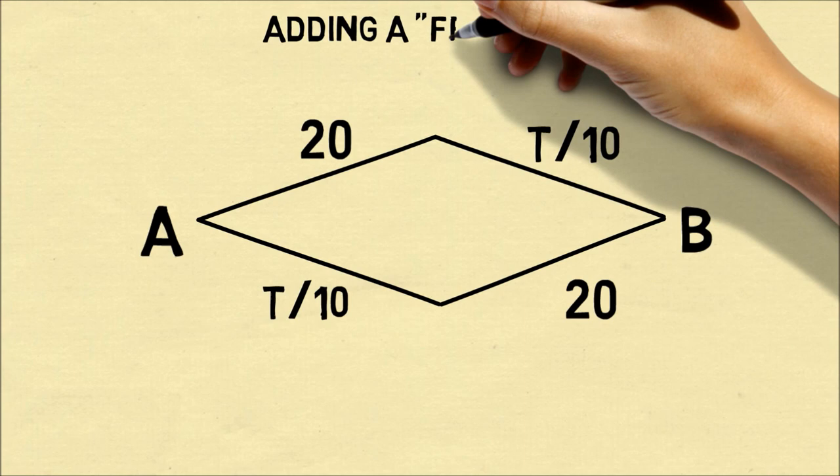We can consider the same exact network of roads, and the same travel times, but we'll add one more road.